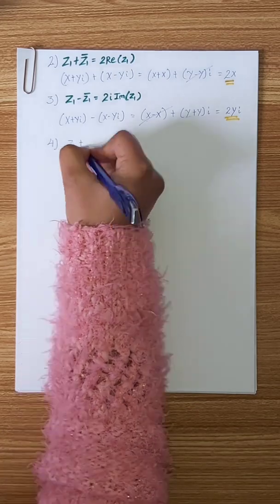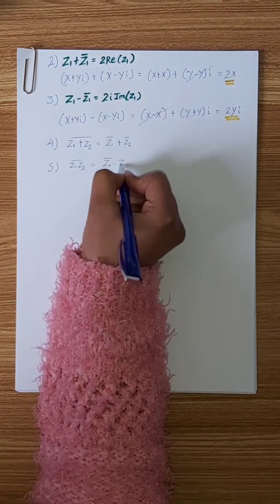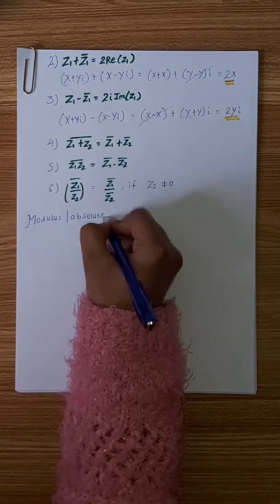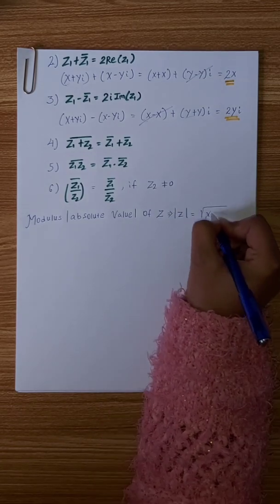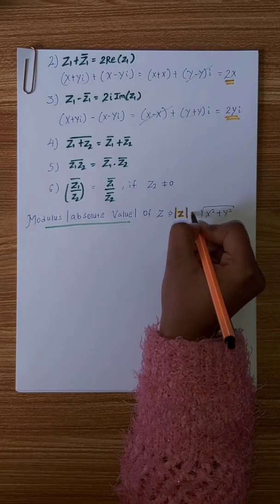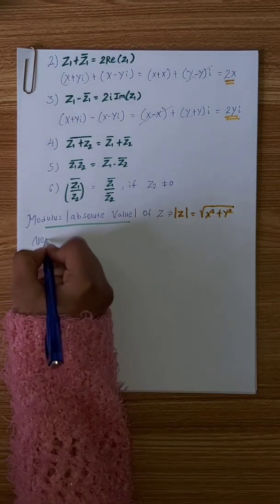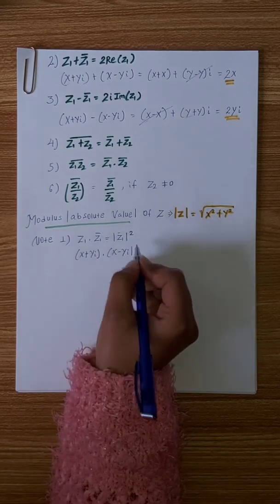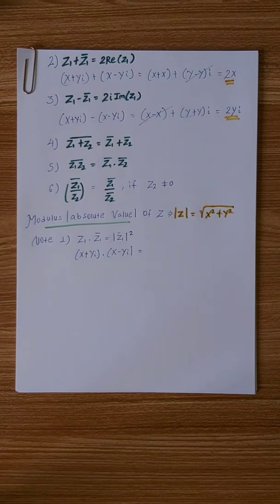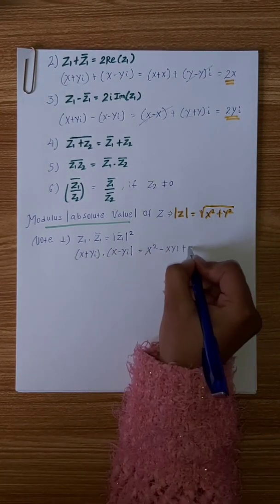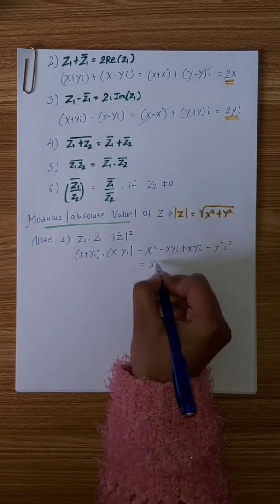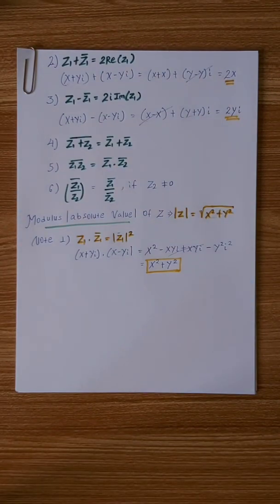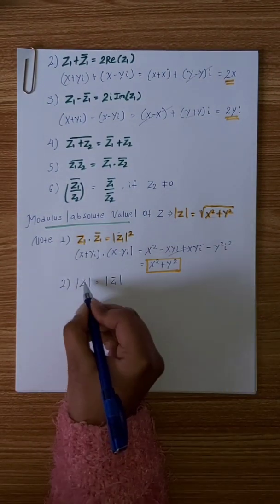Now we look at the modulus. The magnitude of z is equal to the square root of x squared plus y squared, where x squared is the real part squared and y squared is the imaginary part squared. The proof: z = x + yi, conjugate of z is x minus yi, so z times its conjugate equals x squared plus y squared.